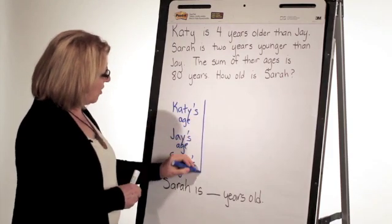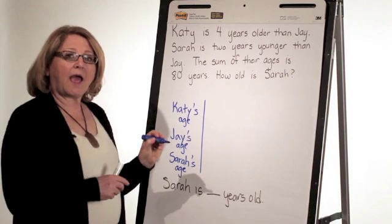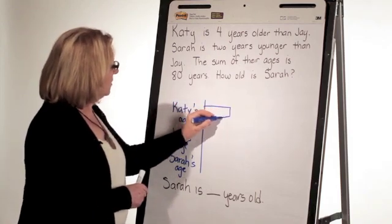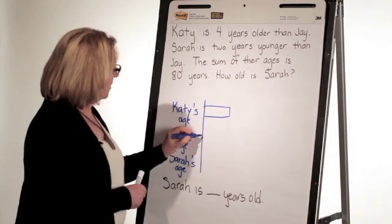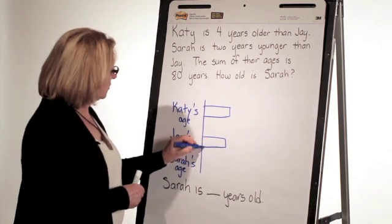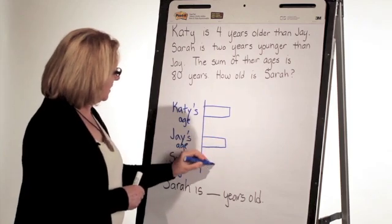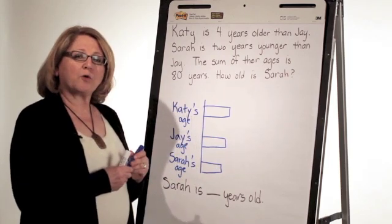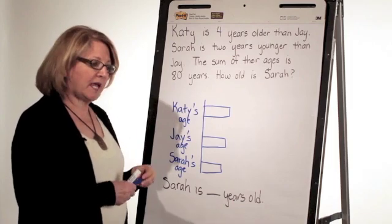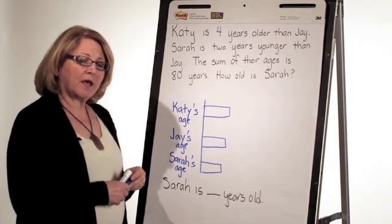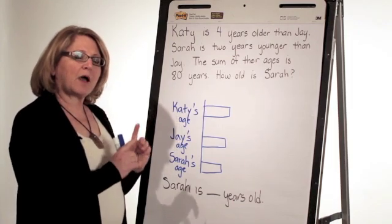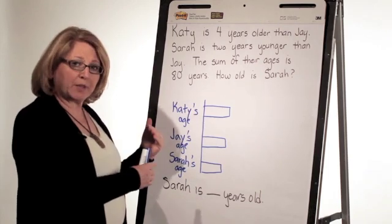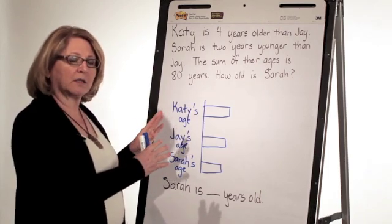I draw a starting line, and I draw unit bars. Unit bars are equal size, equal shape, equal value. I'm going to go back into the problem for a second reading. This time, I read just one piece at a time, and I plug that information into my model.